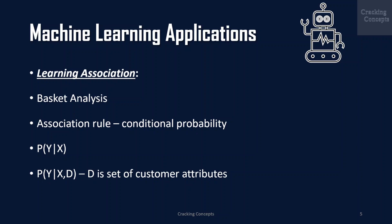In finding an association rule, we are interested in learning a conditional probability of the form P(Y|X), where Y is the product we would like to recommend, conditioned on X, which is the product or set of products that the customer has already purchased. We may also want to distinguish among customers, and toward this end estimate P(Y|X, D), where D is the set of customer attributes such as gender, age, marital status, and so on, assuming we have access to this information.